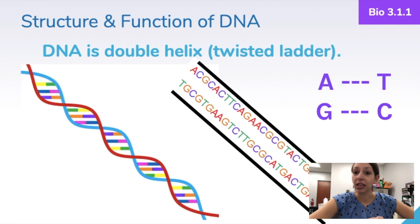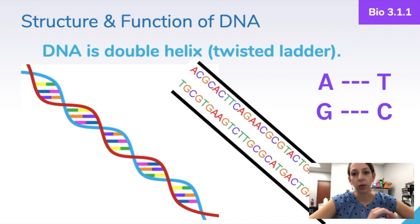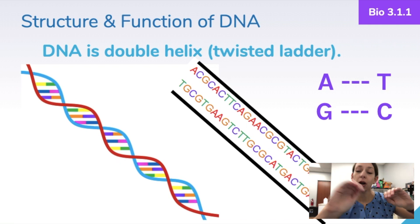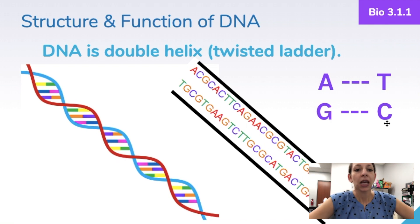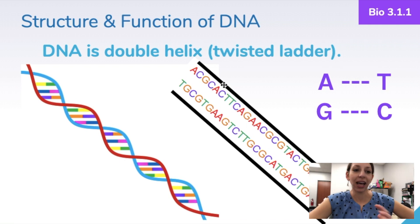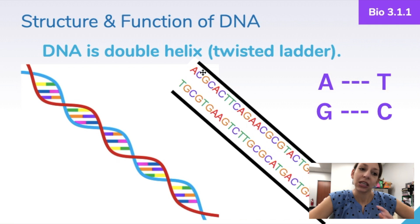DNA's structure is a double helix, or a twisted ladder. The sides are composed of the phosphate-sugar backbone — the phosphate group and the sugar — and the rungs, or the middle parts of the ladder, are composed of complementary bases. Adenine pairs with thymine, and guanine pairs with cytosine, always. These are joined together by hydrogen bonds.